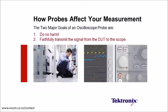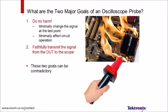Welcome to this informational video on how an oscilloscope probe will affect your measurement. This video will explain how the probe changes the signal you're measuring and what probing specifications to look for to minimize probing effects. You want to select a probe that meets the following criteria: faithfully transmit the signal from your device under test to the scope and do no harm, meaning you want to select a product that changes the signal at the test point as little as possible.